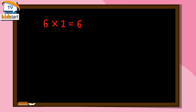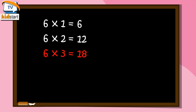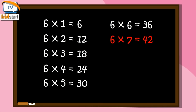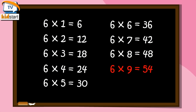Six ones are six. Six twos are twelve. Six threes are eighteen. Six fours are twenty-four. Six fives are thirty. Six sixes are thirty-six. Six sevens are forty-two. Six eights are forty-eight. Six nines are fifty-four. Six tens are sixty.